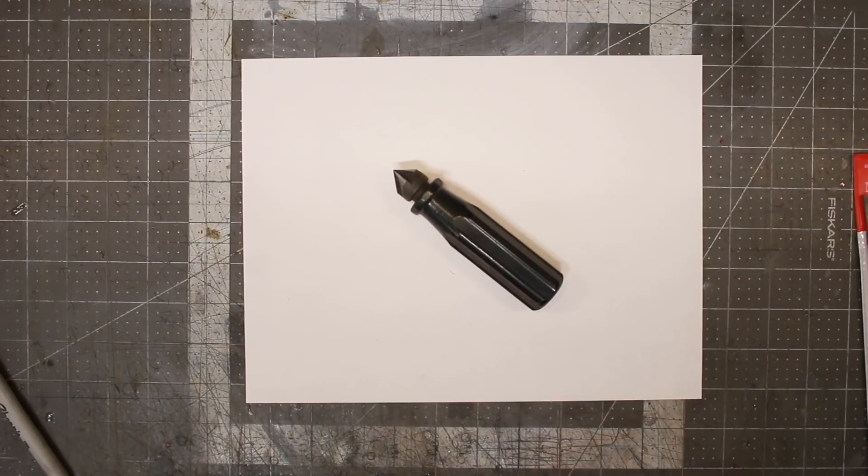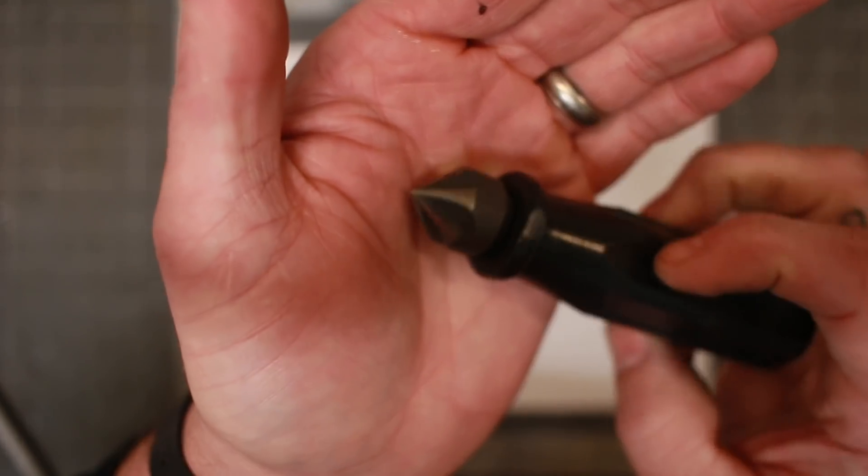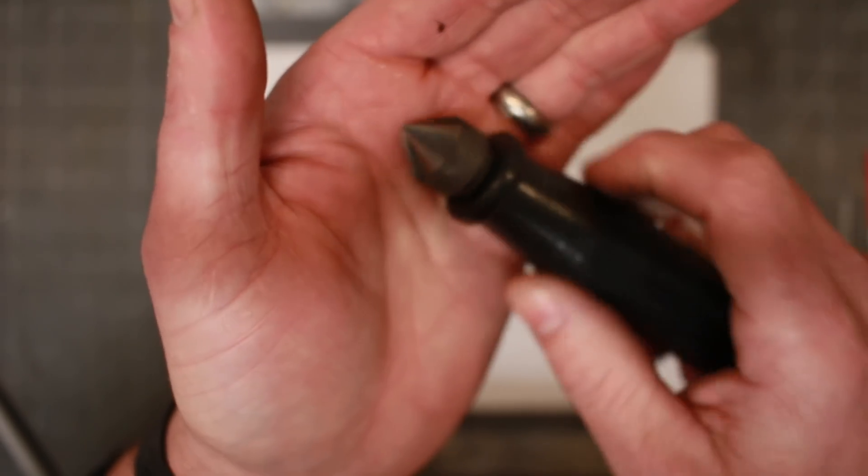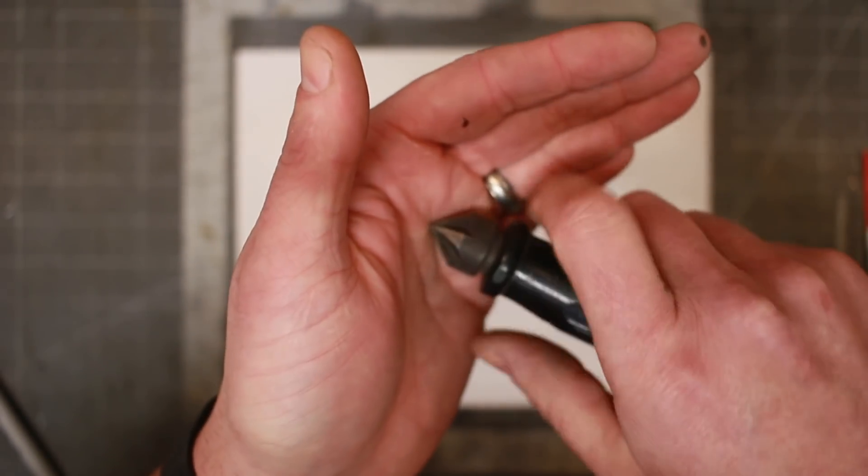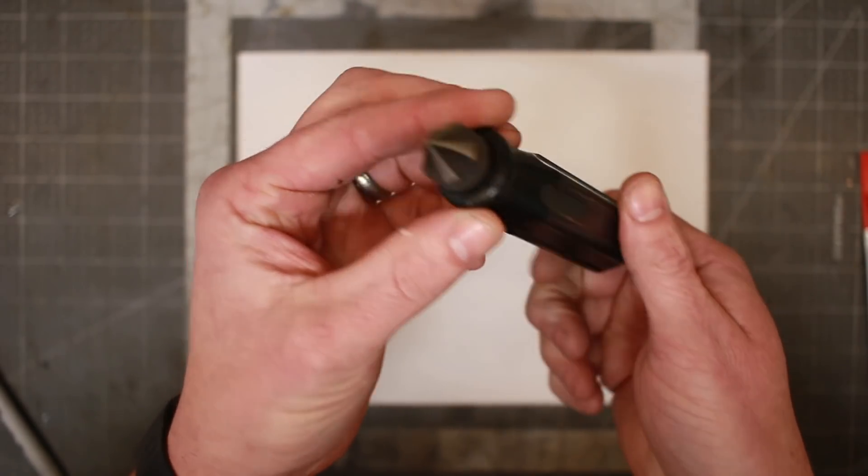Alright the next one is very inexpensive. This doesn't make an appearance in a lot of my videos but I do use this tool all the time. If I've got one or two little holes to deburr in steel or when I'm doing kydex. I use this for deburring my kydex holes all the time. A handheld countersink, very inexpensive, really handy.